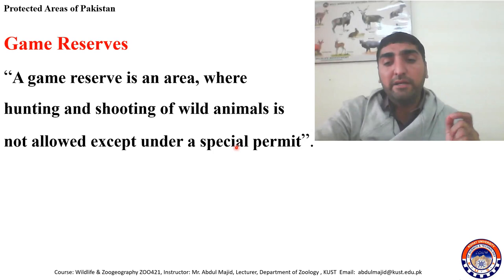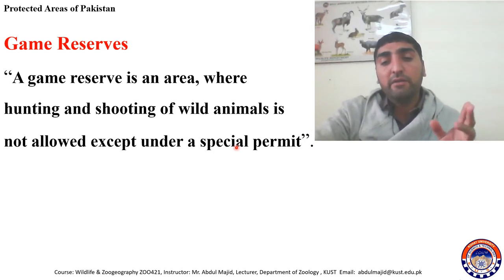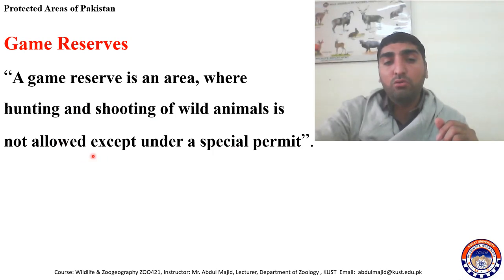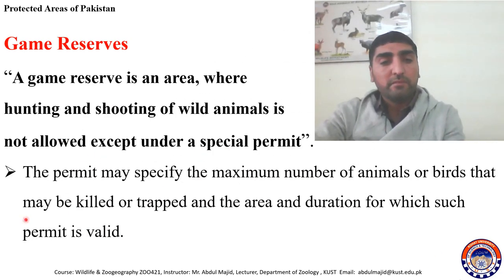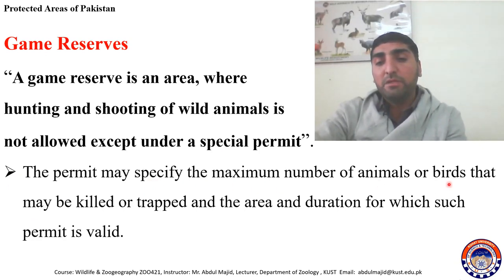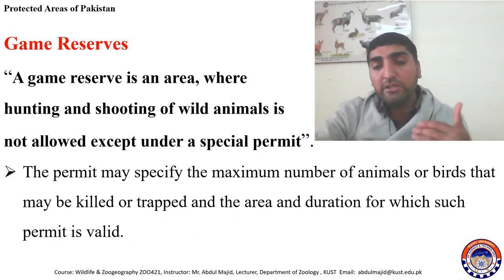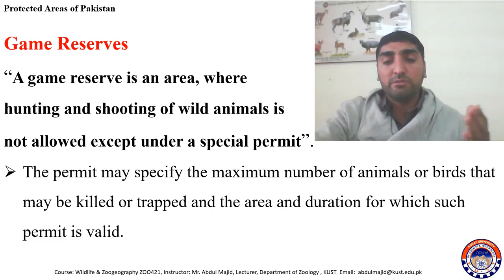The permit specifies from which season to which season you can hunt, which animals, and in what number. The number and the season are both specified in the permit. The permit may also specify the maximum number of animals or birds that may be killed or trapped and the duration for which such permit is valid. Everything is clear in the permit: the expiry date, the number of animals, the area, and the season.